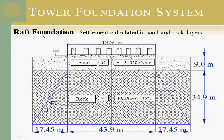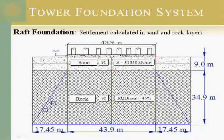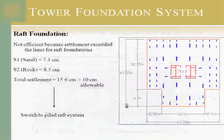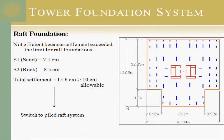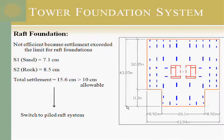For calculating the raft foundation, we have to check the settlement. We assume sand, because it's a man-made island — about 9 meters of sand, then rock starts with an average RQD of 45%. When we checked the settlement, the sand settlement was 7.1 cm and the rock settlement was 8.5 cm. The maximum allowable settlement for a raft is 10 cm, but it was not adequate for this system, so we showed all the details and calculations confirming that a raft foundation would not be acceptable here.